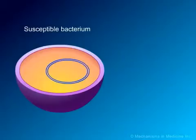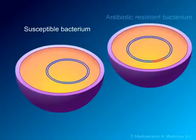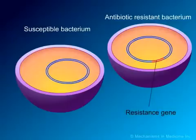Bacterial resistance to beta-lactam antibiotics may be acquired by several routes. One of the most important mechanisms is through a process known as transformation. During transformation, chromosomal genes are transferred from one bacterium to another.